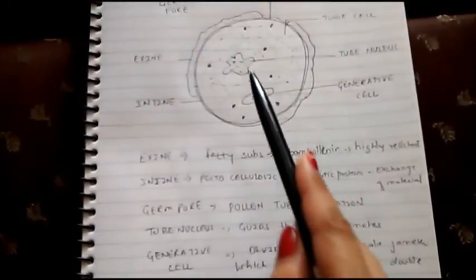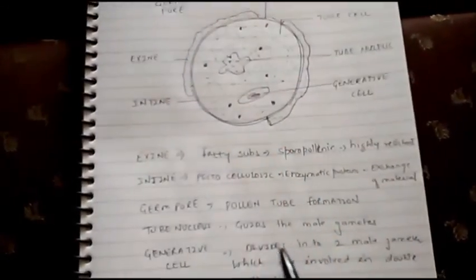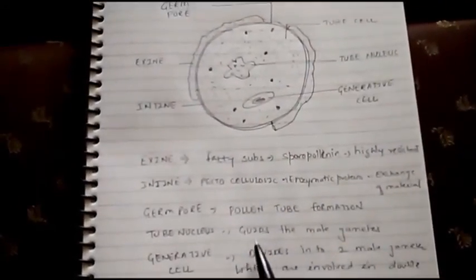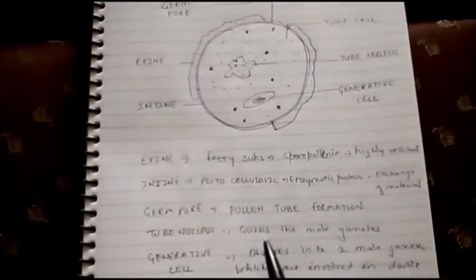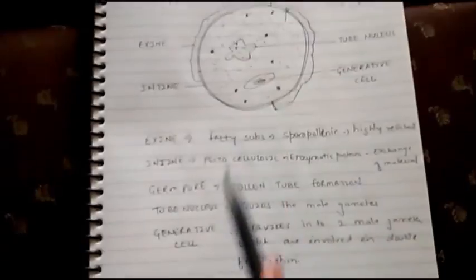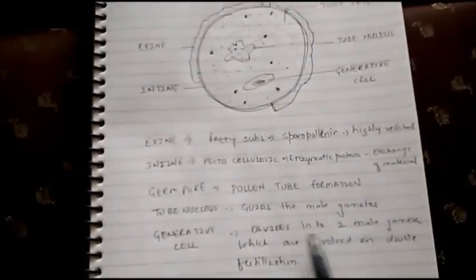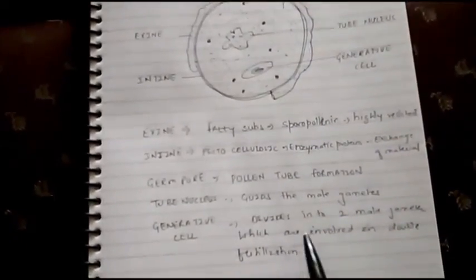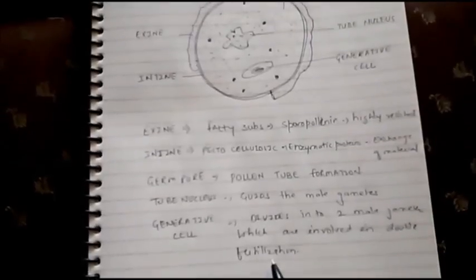Then inside there is tube nucleus which guides the male gametes after the formation of pollen tube towards the ovary. And there is generative cell which inside the pollen tube divides into two male gametes which are involved in double fertilization.